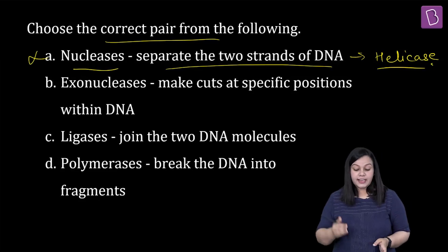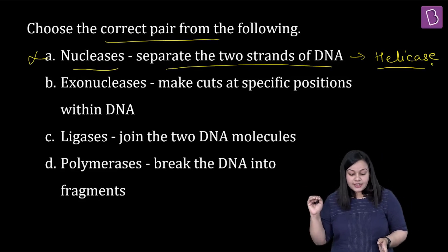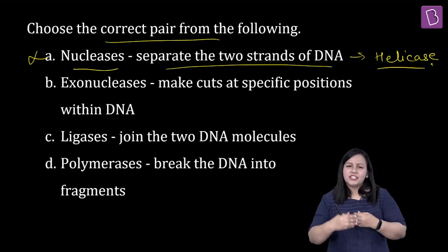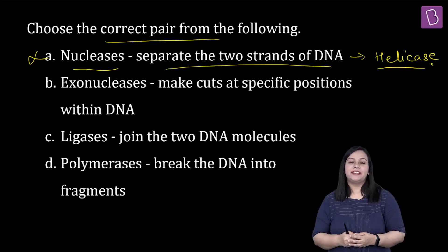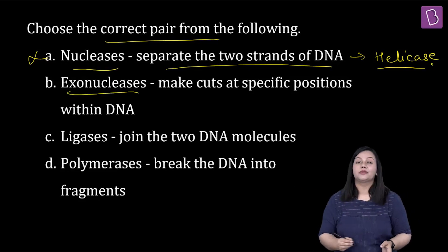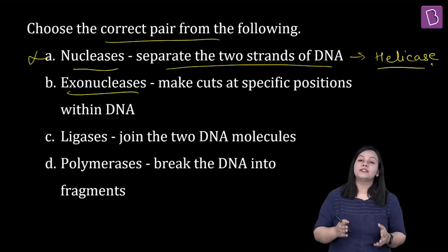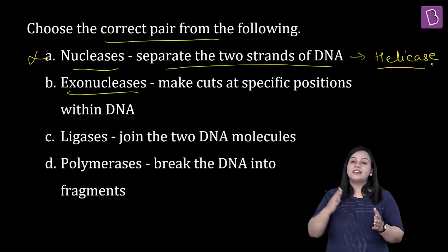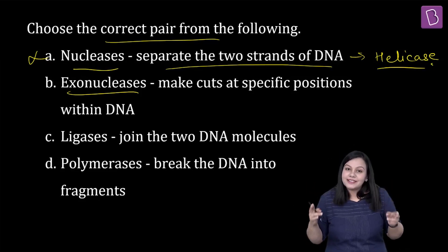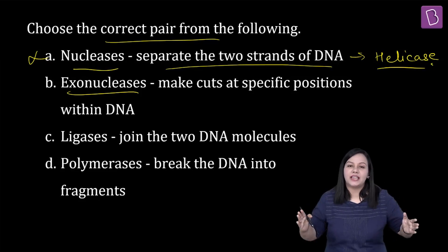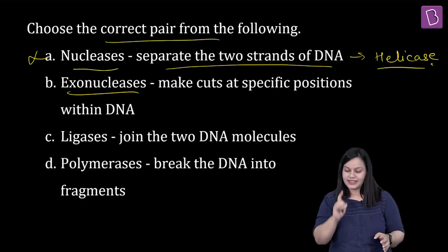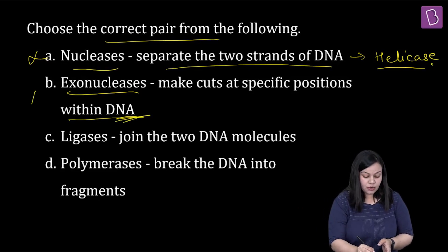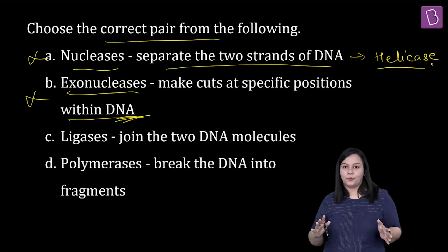Doosre pe chalte hain — exonuclease. Option diya gaya hai: 'exonuclease makes cuts at specific position within the DNA.' Exo means towards the outer side. Exonucleases make cuts in DNA but towards the outer side and not within the DNA. Because of this particular statement, this option also goes as a wrong option.